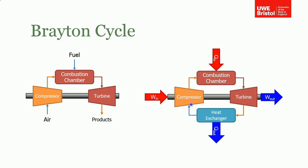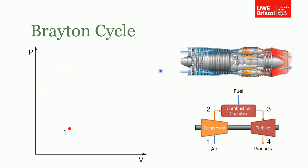On a PV diagram we have points one, two, three, and four as we go around the cycle. Starting at point one — air entering the gas turbine at relatively low atmospheric pressure — the other side of the compressor is at much higher pressure. Since this is an ideal cycle, we say this compression process is isentropic, just as we did for the diesel and Otto cycles.